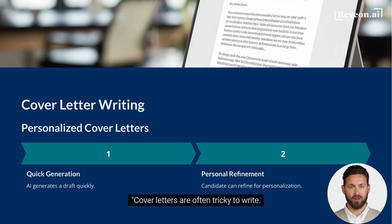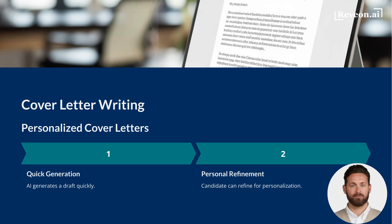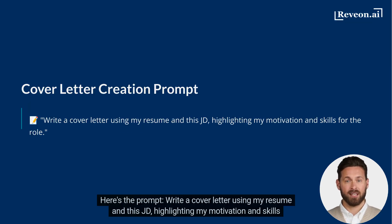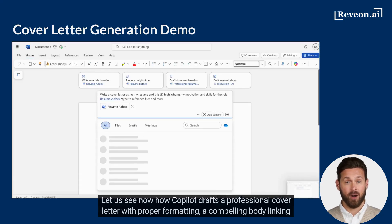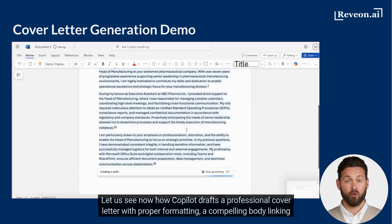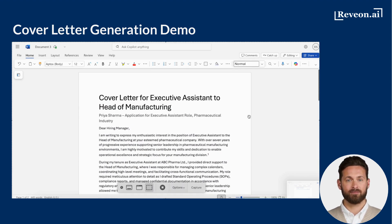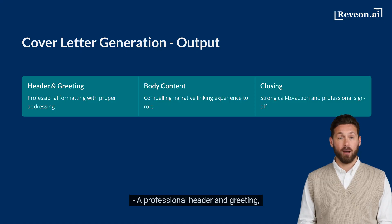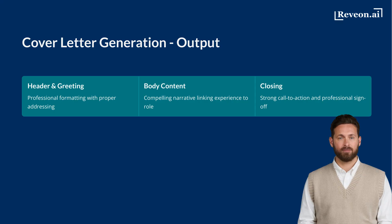Cover letters are often tricky to write. Copilot can generate a strong draft by combining your resume with the JD, so you only need to refine it with your personal motivation. Here's the prompt: Write a cover letter using my resume and this JD, highlighting my motivation and skills for the role. Copilot drafts a professional cover letter with proper formatting, a compelling body linking your experience to the role, and a polished closing. The output has a professional header and greeting, a body paragraph connecting your skills and the role, and a strong closing call to action. It's a ready-to-use letter.